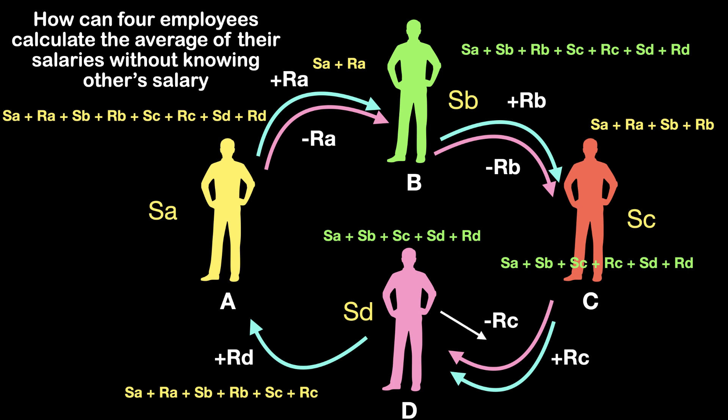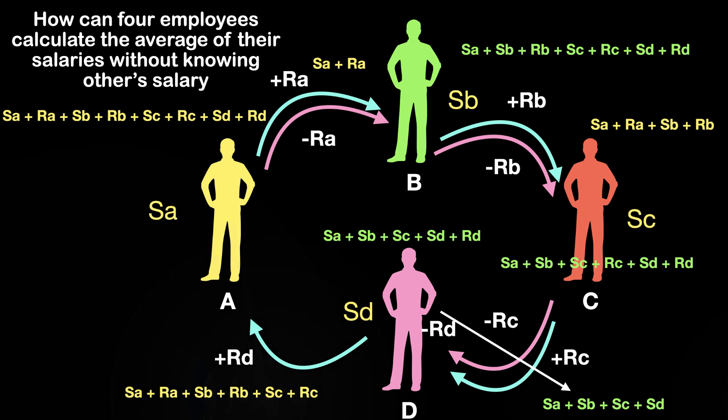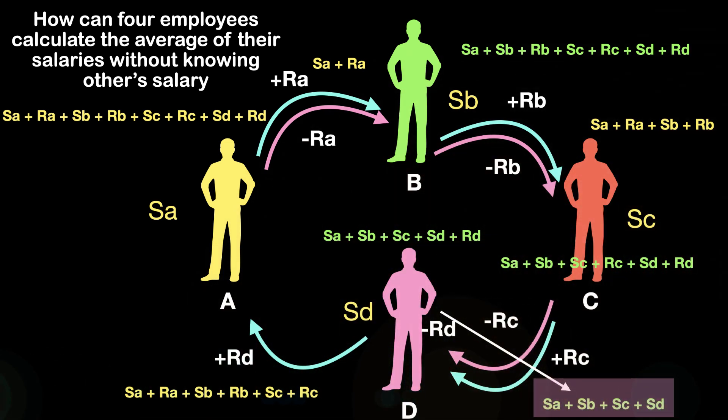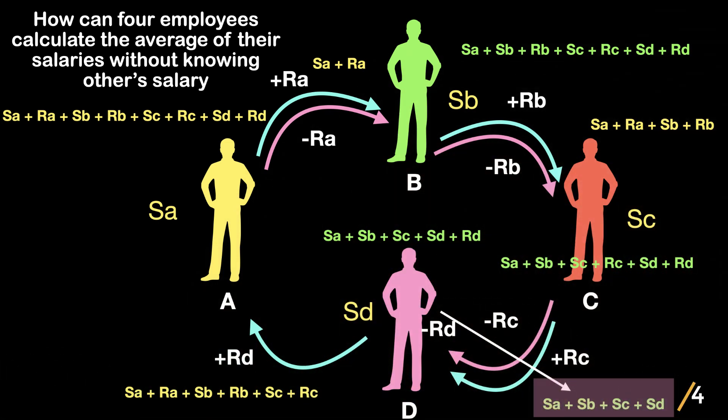And finally, D subtracts his random amount and then the figure becomes Sa plus Sb plus Sc plus Sd. Now D knows the sum of all salaries. Now it is easy to get the average by dividing the final figure by 4, which was asked as a part of the puzzle.